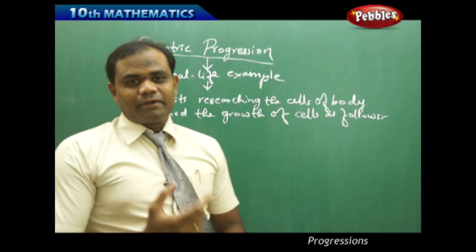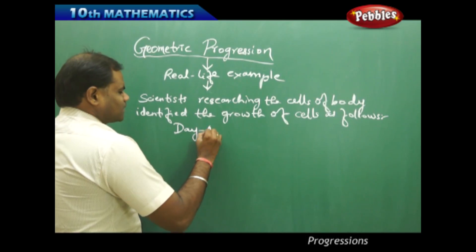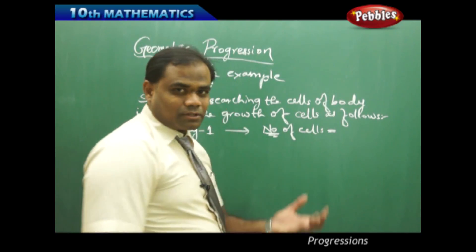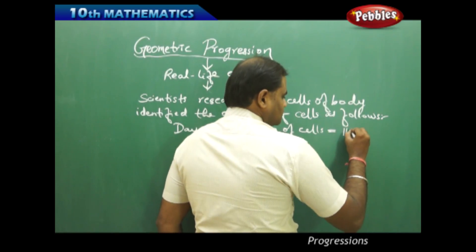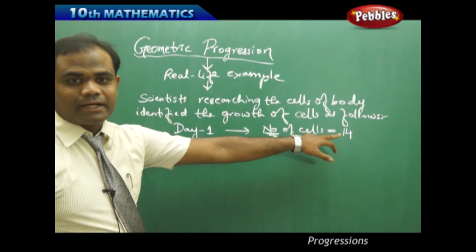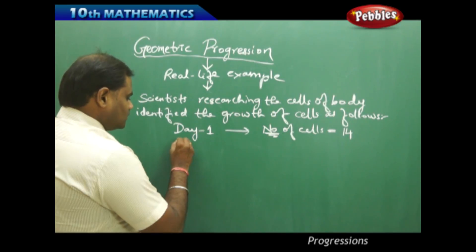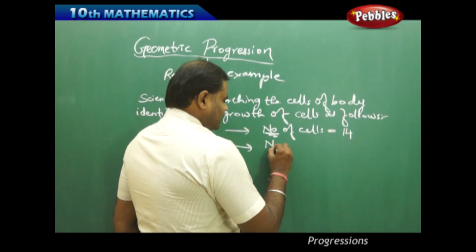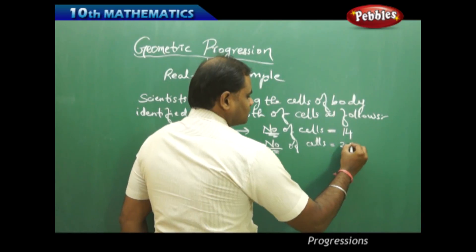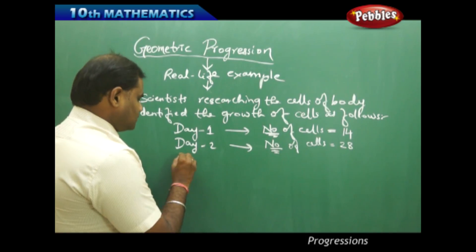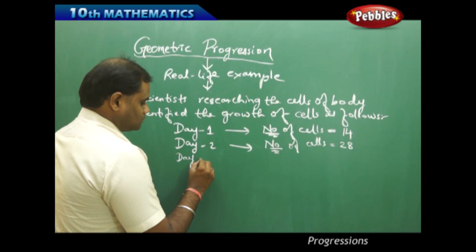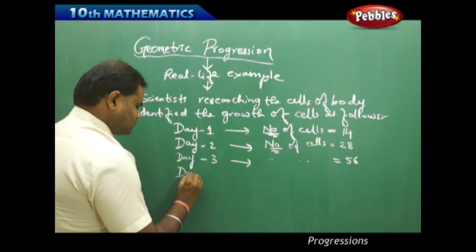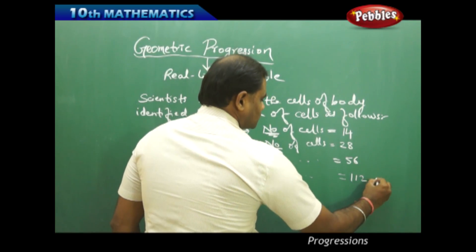The scientists were doing research on an everyday basis. On day one, they identified the number of cells of one particular specimen was 14. On day two, they identified the number of cells was 28. Then on day three, the number of cells was 56. Then on day four, the number of cells was 112, and so on.